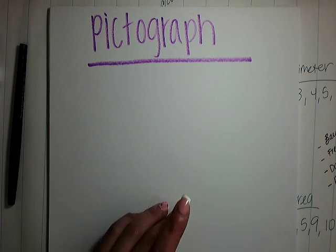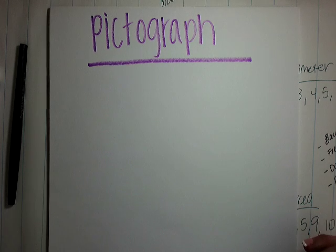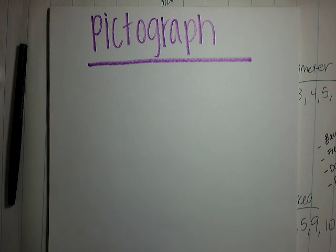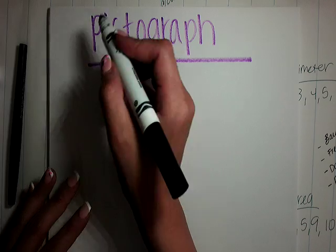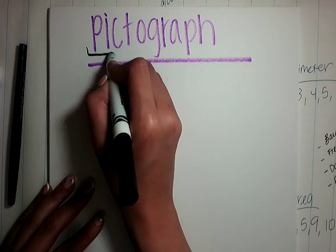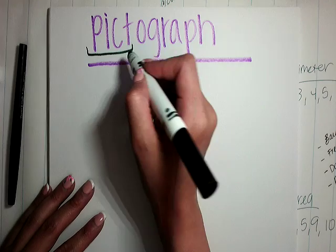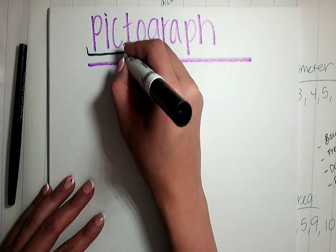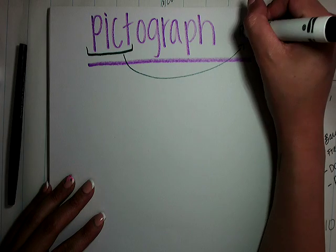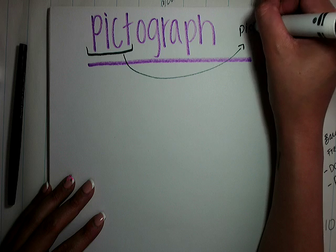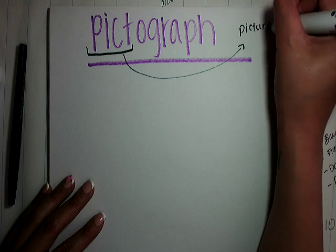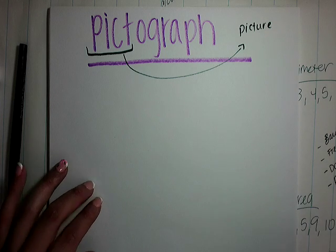This is the last kind of data that I would like to show you, the last type of data that you guys would see. Pictographs. Remember, pictographs has this word right here — 'picto' — which if you keep writing, it's 'picture.' So that means we're going to be using pictures in our graph.